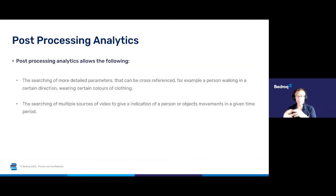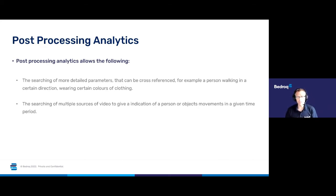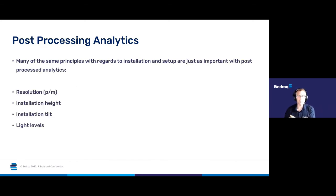Post-process analytics allows the searching of much more detailed parameters that can be cross-referenced — for example, a person walking in a certain direction wearing certain colours of clothing — and also searching of multiple sources of video to give an indication of a person's or object's movement in a given time period. Many of the same principles apply regarding installation and setup of cameras: resolution, installation height, tilt, light levels are just as important here.